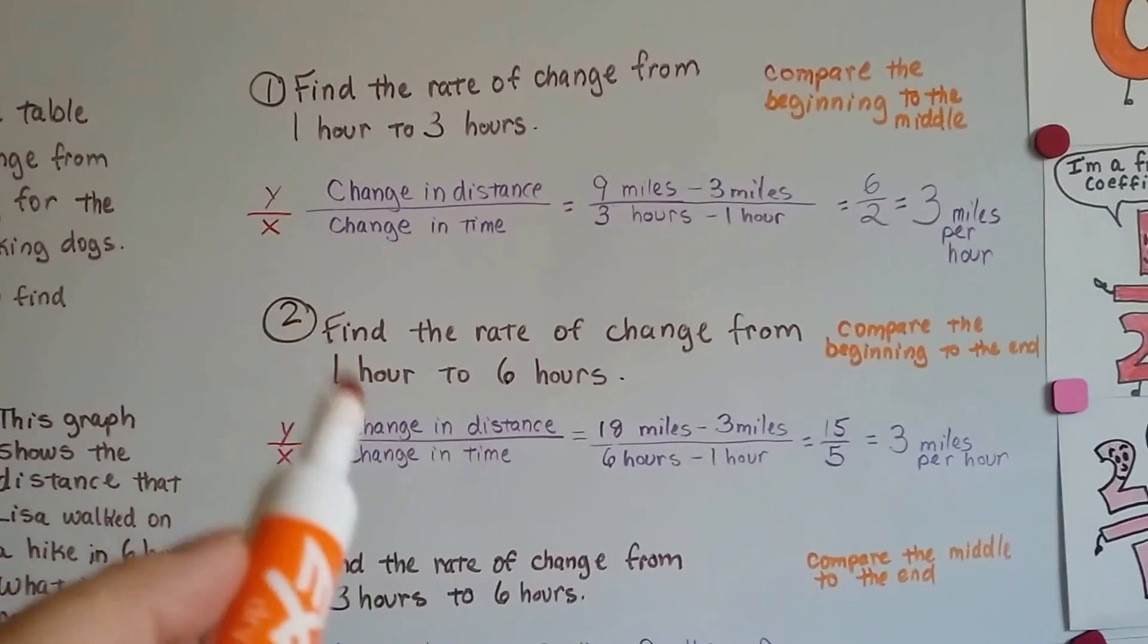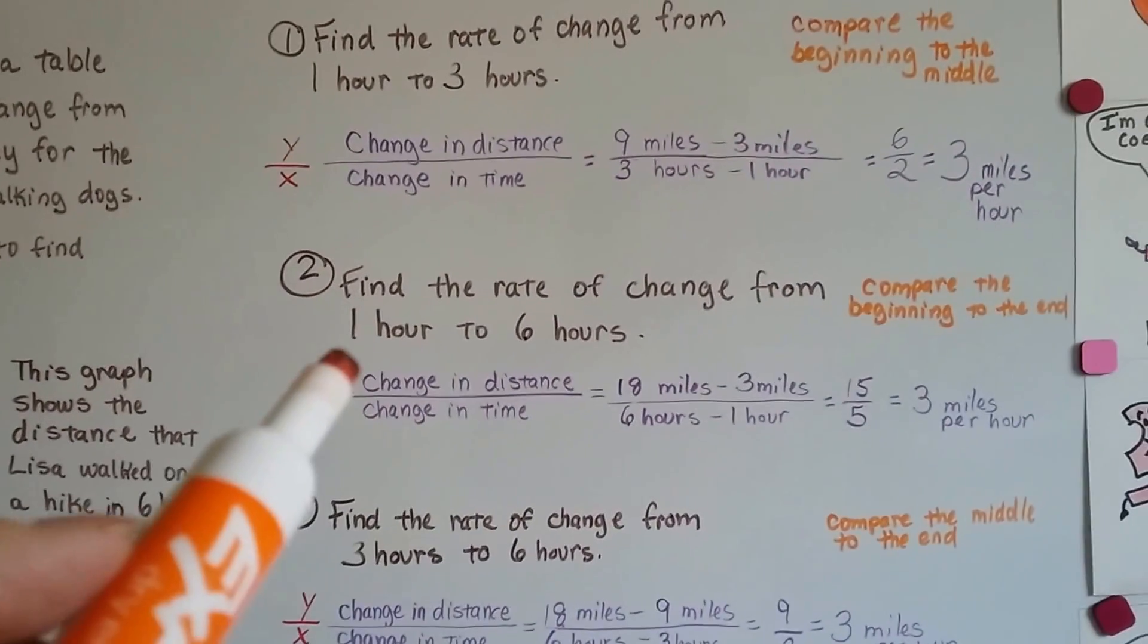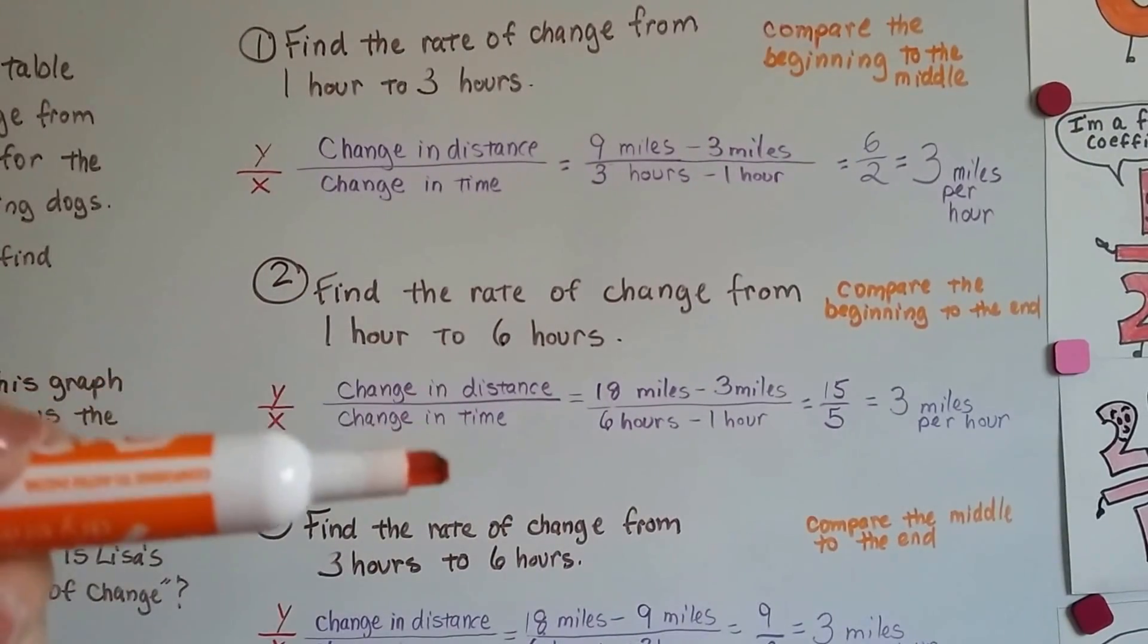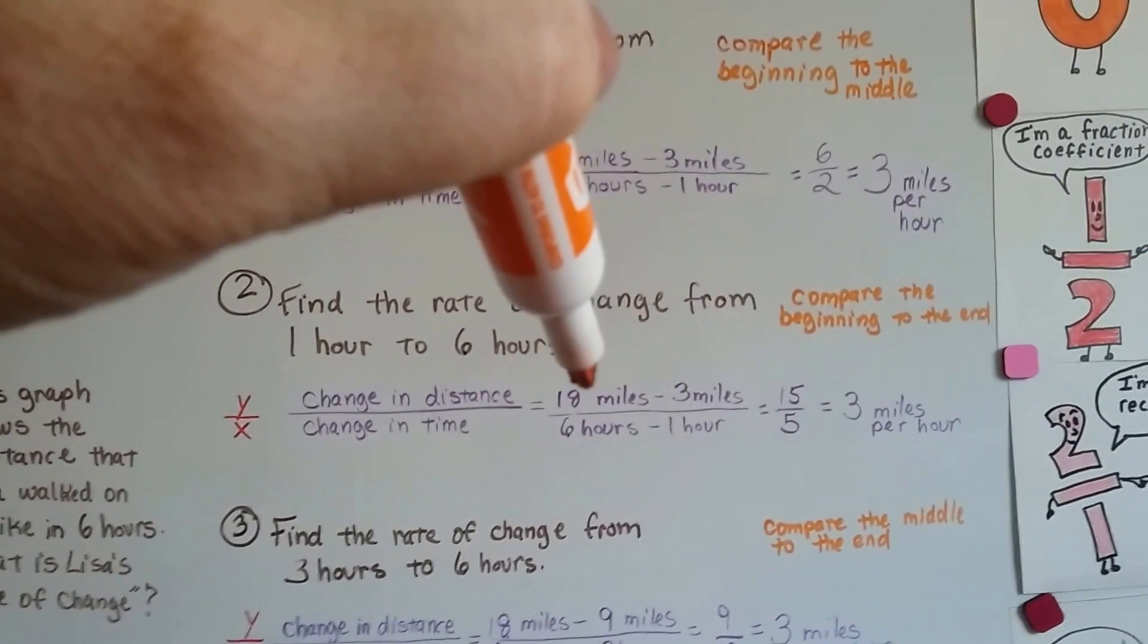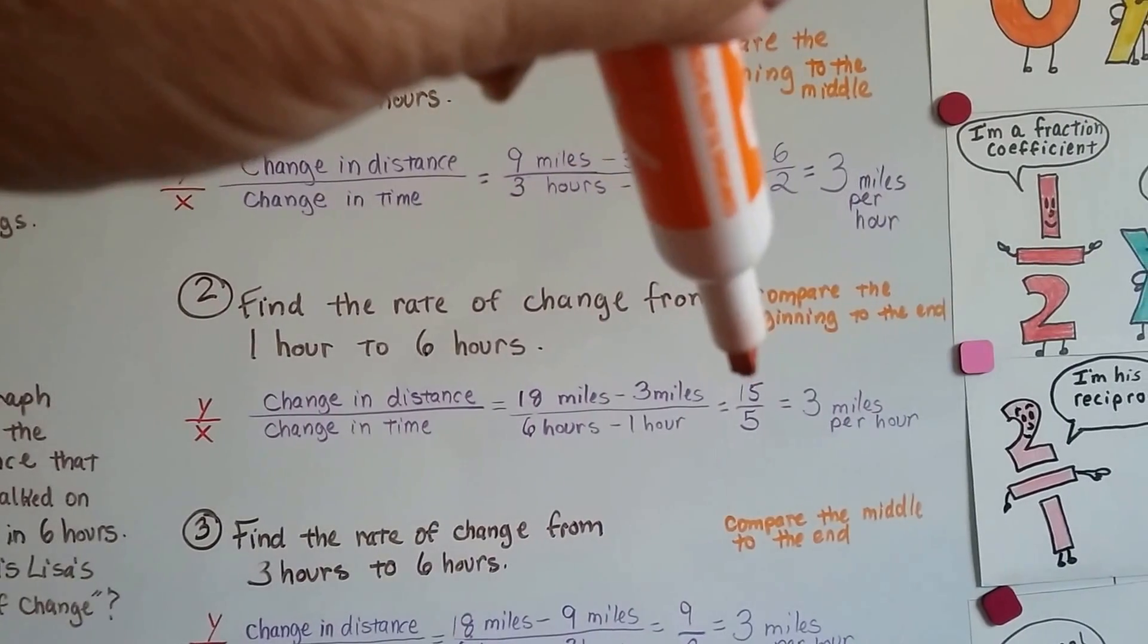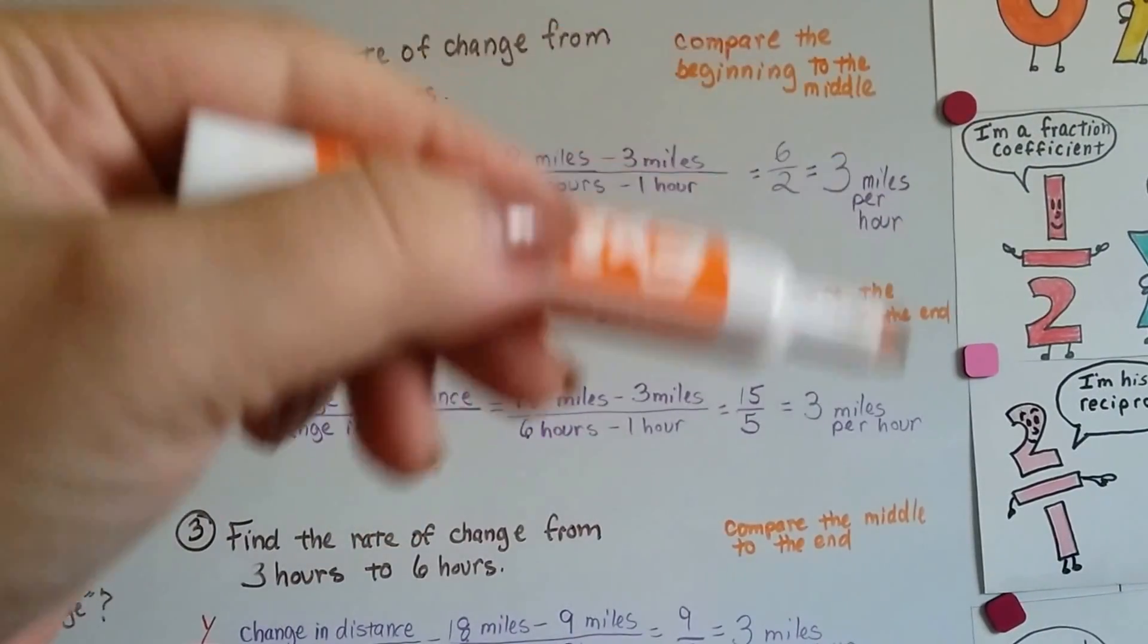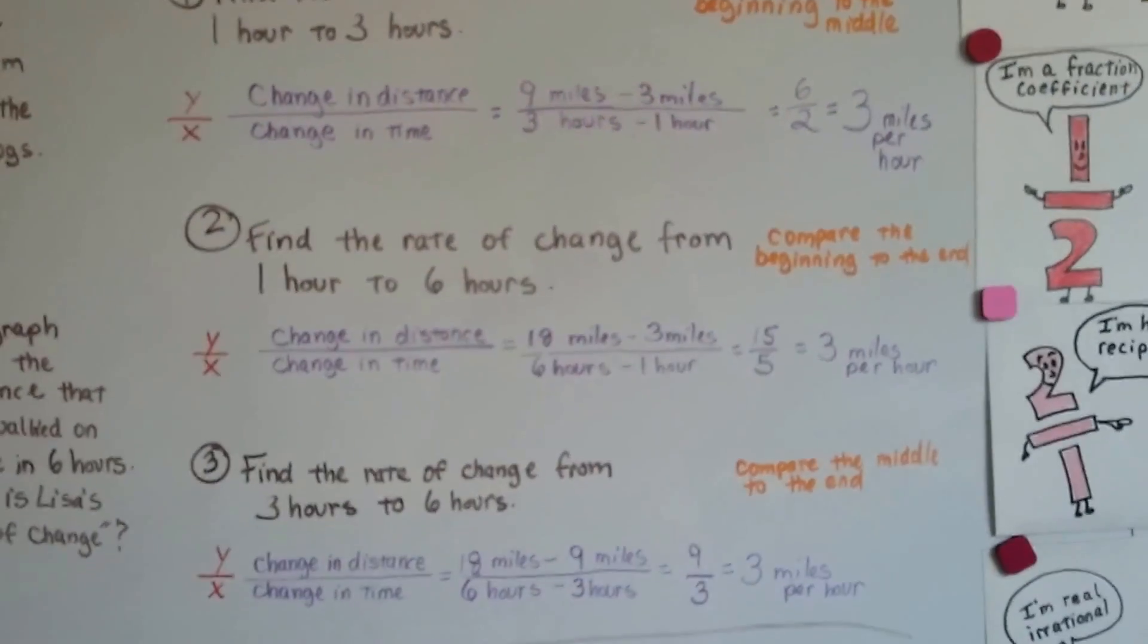Now we're going to compare the beginning to the end. We're comparing the one-hour mark to the six-hour mark. That's y over x, the change in distance, the miles, over the change in time, the hours. At six hours, she walked 18 miles, and at one hour, she walked three miles. 18 minus 3 is 15. Six hours minus one hour is five. Fifteen divided by five is three. So it was the same miles per hour from the beginning to the end.